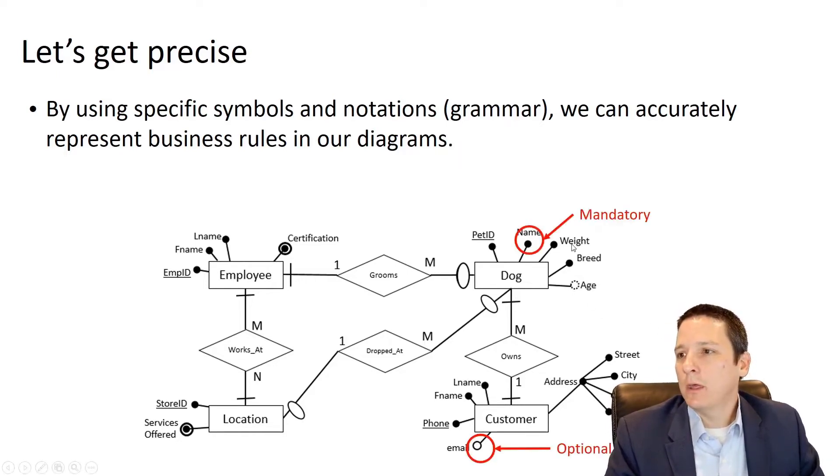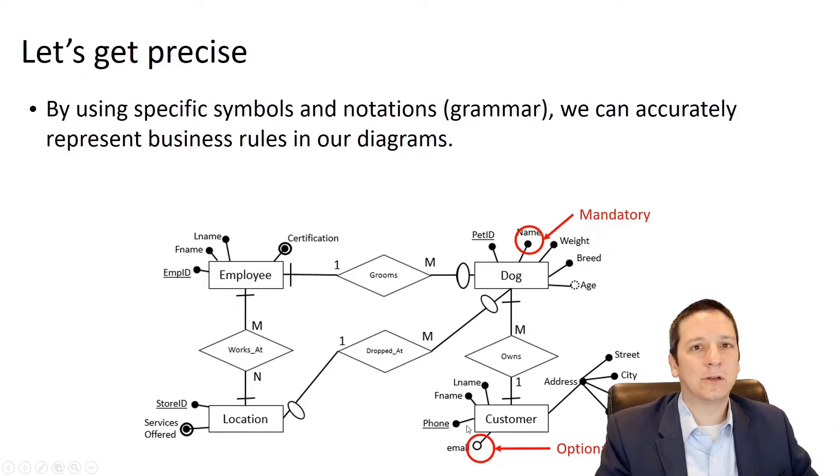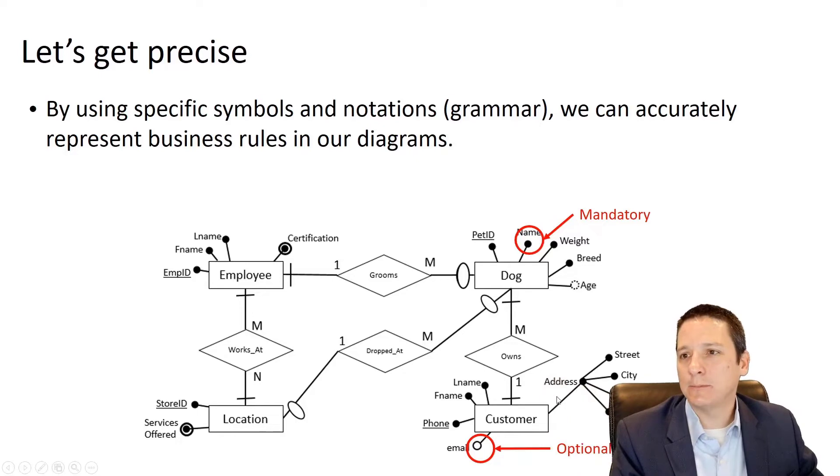So for example, for each one of our attributes, we have a little line with a dot. And if that dot is filled in, that means that that attribute or having a value for that attribute is mandatory. So we have to know the pet's name, the pet's weight, the pet's breed. But if the dot is not filled in, that indicates that the attribute is optional. So for the customer, we have to have their address, first name, last name, and phone number. But if they don't want to give us their email address, that's fine. It's optional.